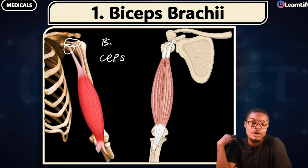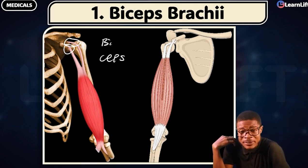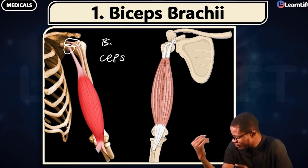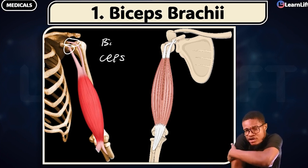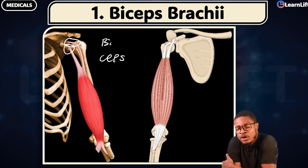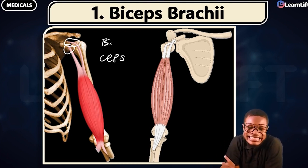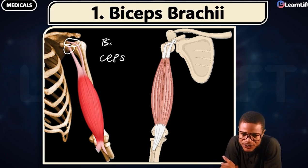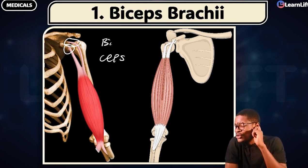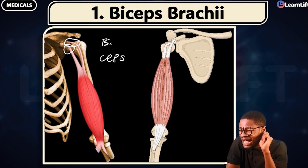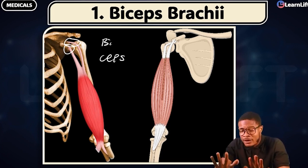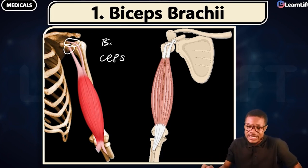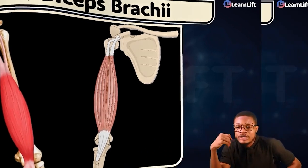The one at the posterior compartment — your triceps brachii — it has to do with extension, so it is an extensor muscle. Don't mix them up: flexor = anterior compartment, posterior compartment = extensor. What are the flexor muscles? Your biceps brachii, brachialis, and the coracobrachialis.